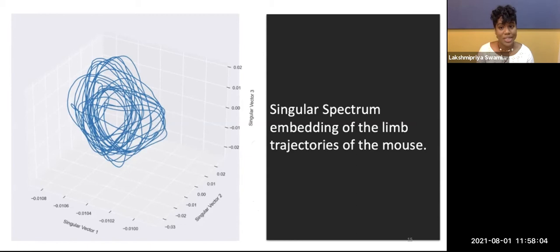Here is a plot of a singular spectrum analysis embedding of the trajectories of the mouse limbs. It provides me with well-resolved step cycles. And it is already apparent from this that there are two large classes of step cycles. But also, within these two classes, there is a lot of variability. And this is exactly the complexity that I want to quantify.